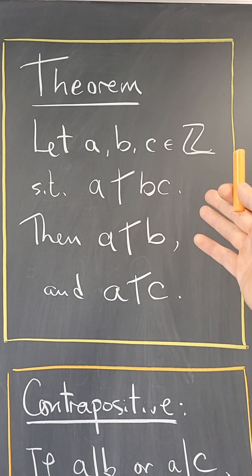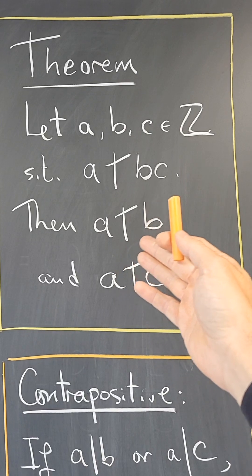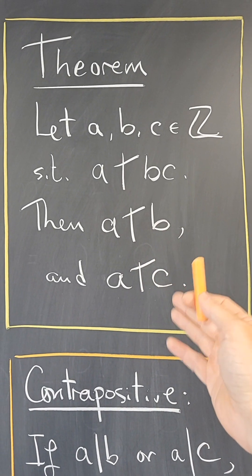Let A, B, and C be integers. If A is not a divisor of BC, then A is not a divisor of B and A is not a divisor of C.